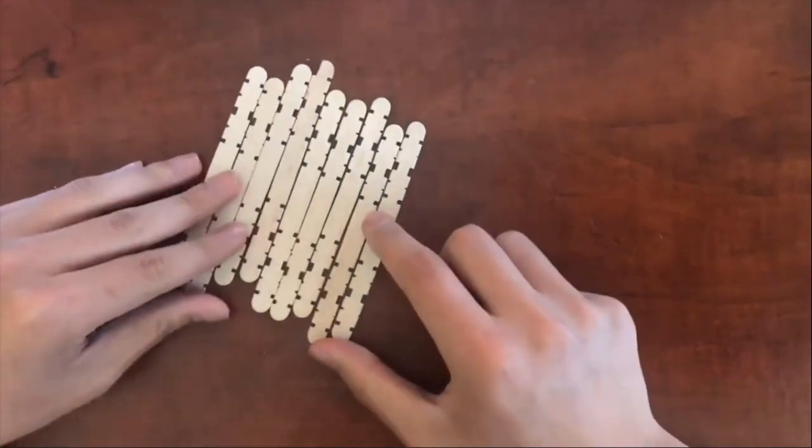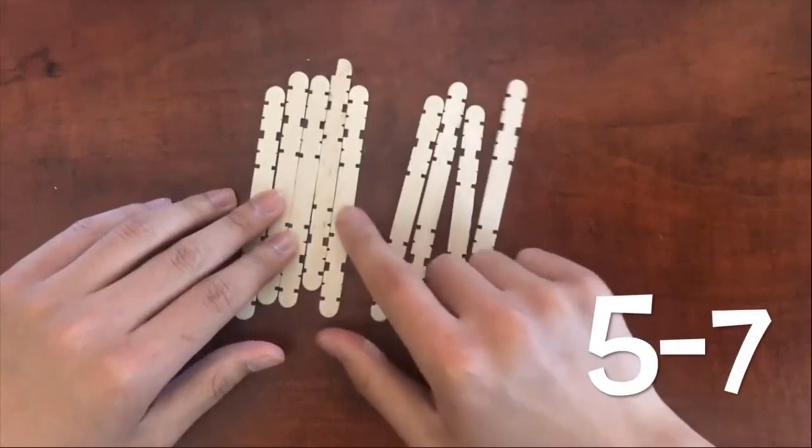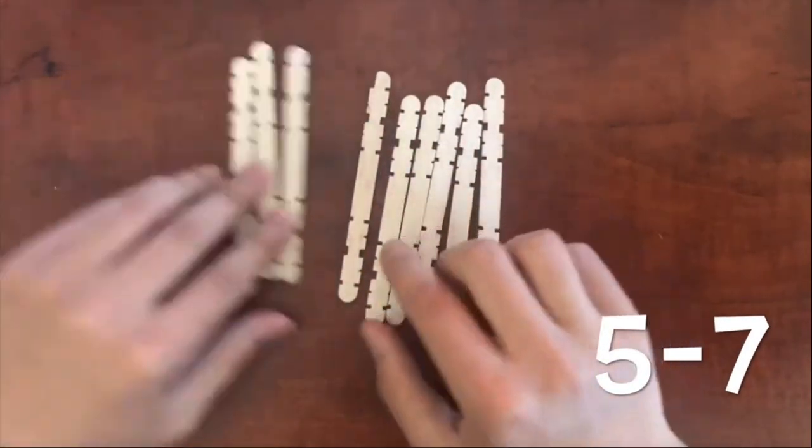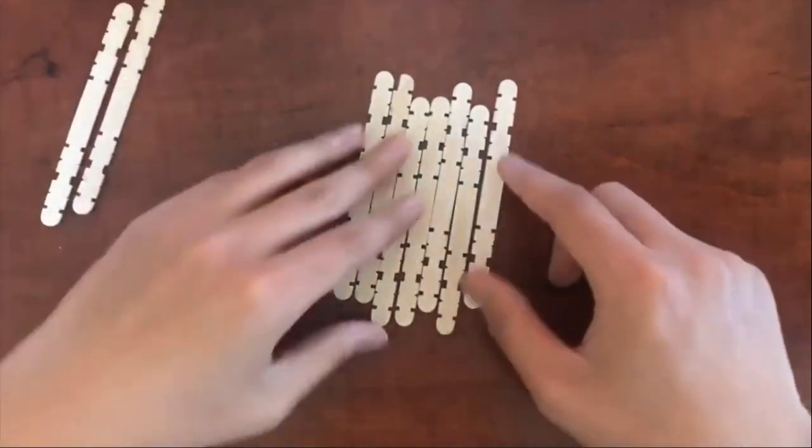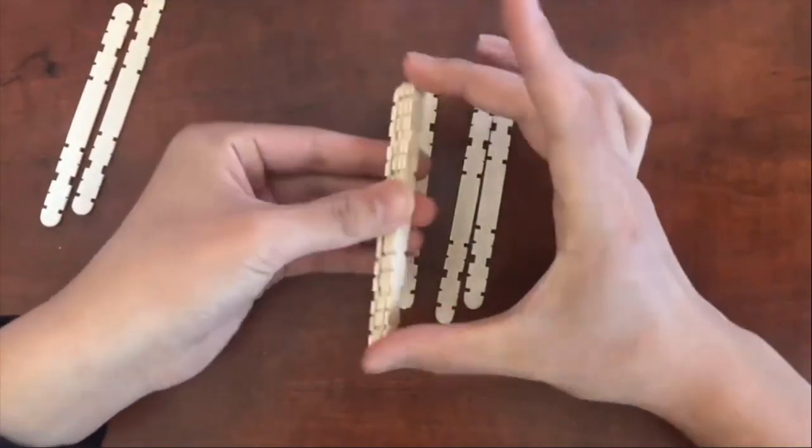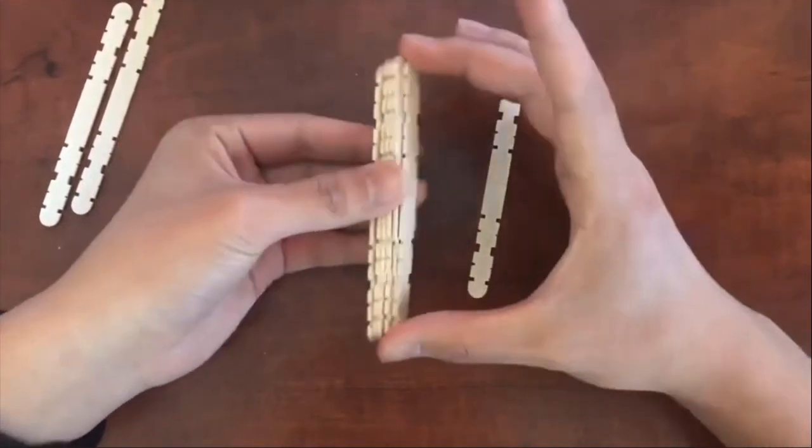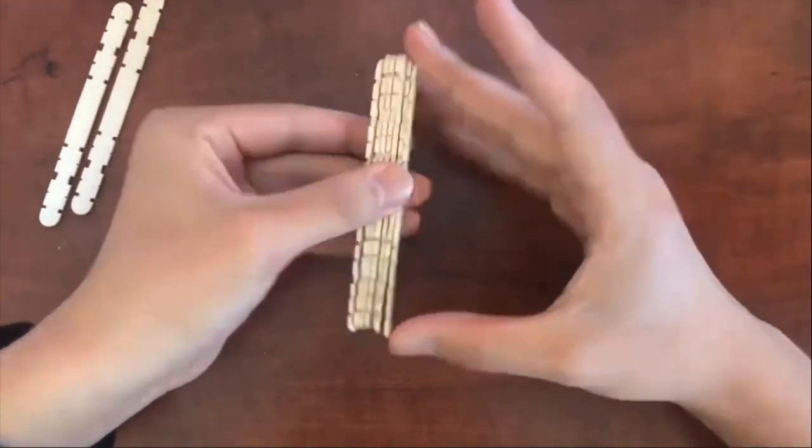But I will not, and to start, first I'm going to count out 7 popsicle sticks. You can also use 5 if you like. Once you have 7, you're going to want to layer them up, like so. This will be the base of our catapult and what point we will be launching from.